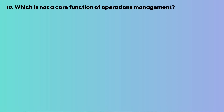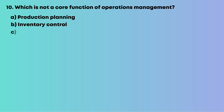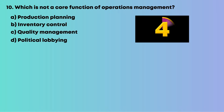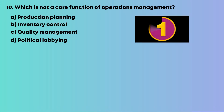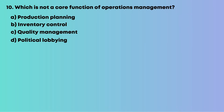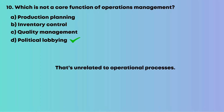Question 10: Which is not a core function of operations management? Options are: A, production planning; B, inventory control; C, quality management; D, political lobbying. Political lobbying is unrelated to operational processes. The answer is D, political lobbying.